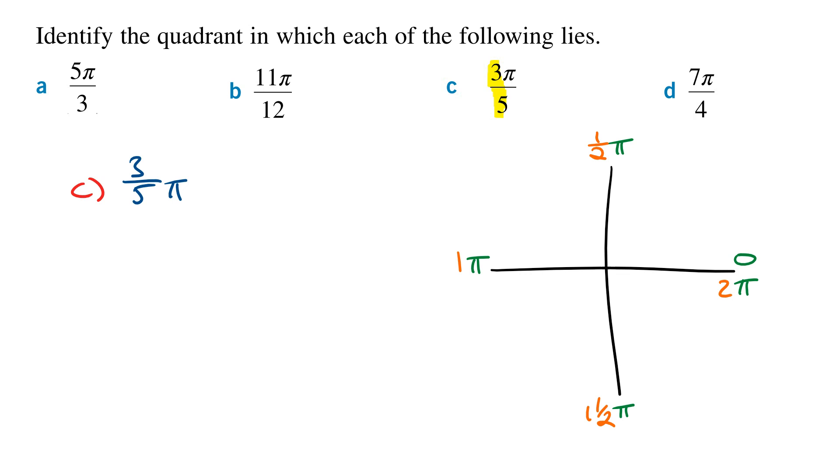Now 3/5 is more than a half, but less than 1. And so this is going to be more than a half of a π, and less than 1π. And so the angle 3π/5 is also in the second quadrant.